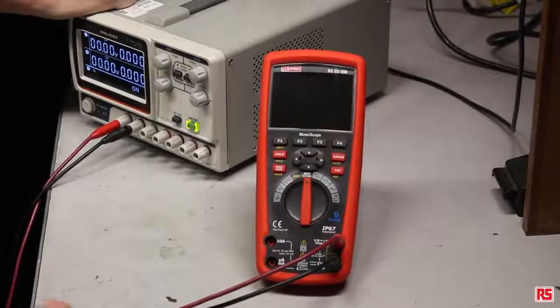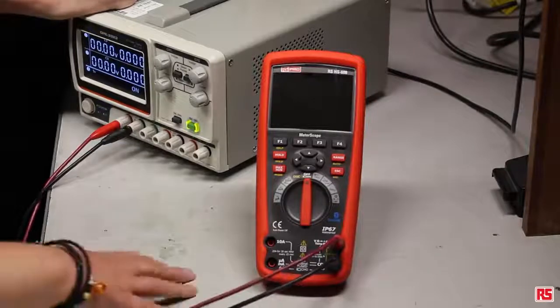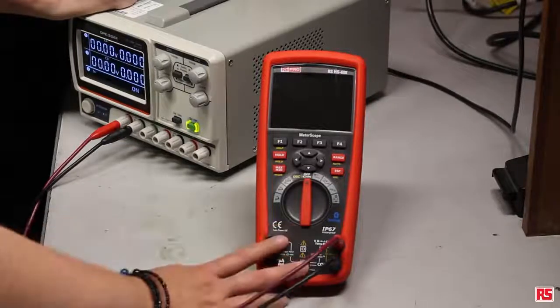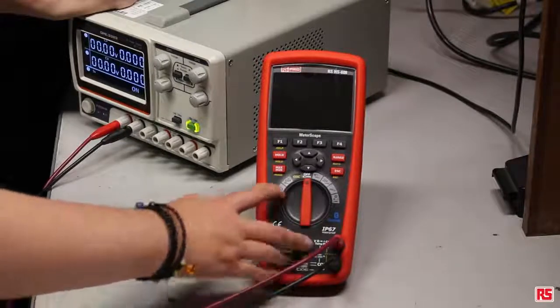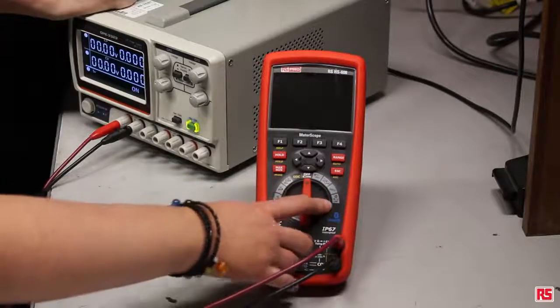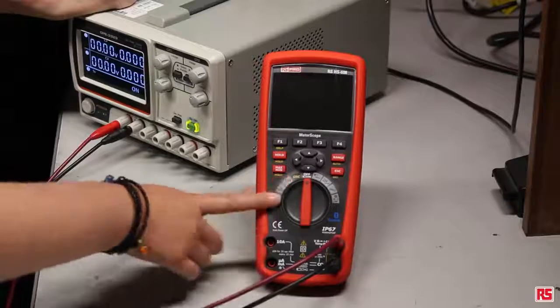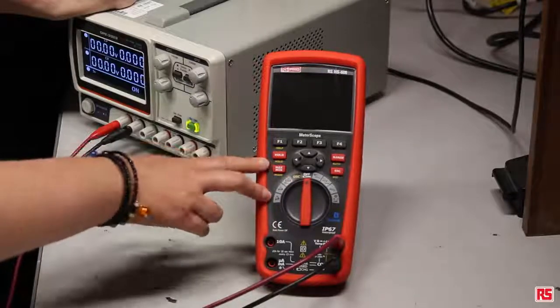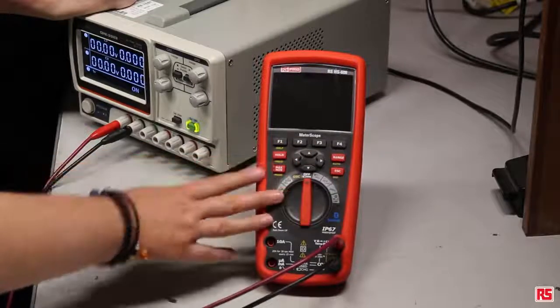Okay so we're going to start using the meter now. As you can see on the front there's a range of options: you've got the different current options, the different voltage options, your frequency, your ohms, your capacitor, and your oscilloscope. You've got your hold, your min max, your range, and a lot of soft keys.